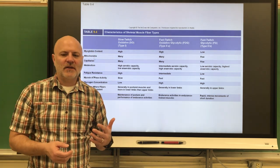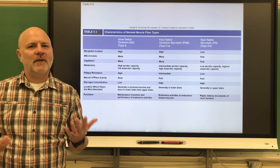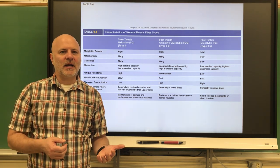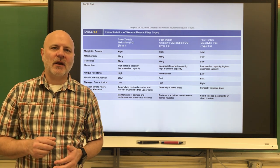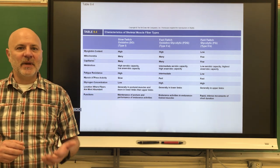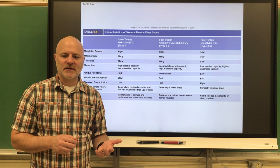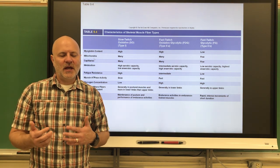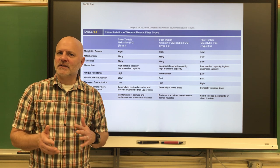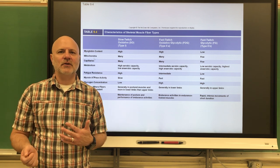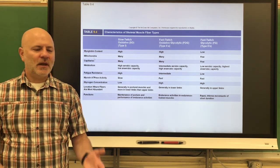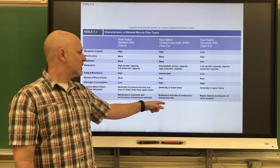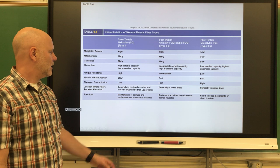Next are fast oxidative fibers. They have a fast speed of contraction and do aerobic respiration. They also have high myoglobin content, an intermediate amount of glycogen, and many mitochondria and blood vessels. They can also do anaerobic respiration, so they are moderately fatigue resistant, though they can still reach fatigue. These are used for endurance activities.